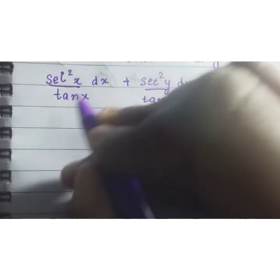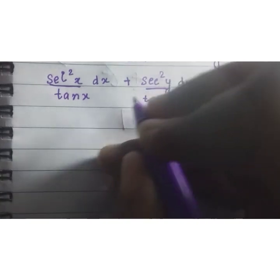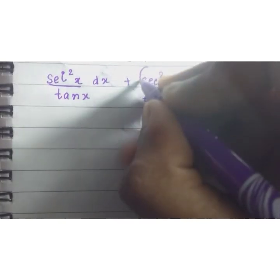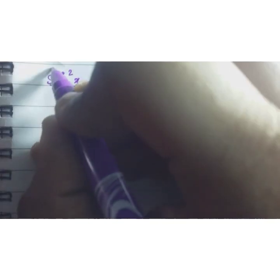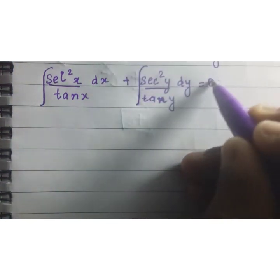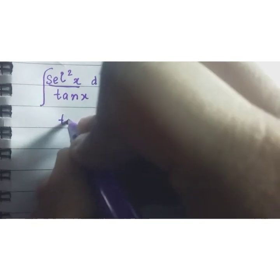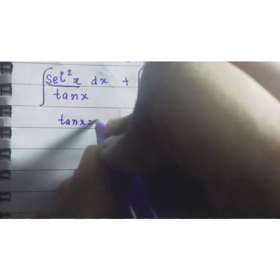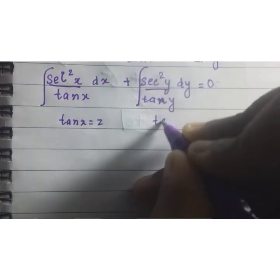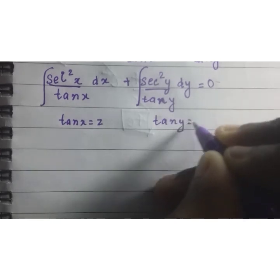Now we need to solve this. We can put an integration sign over here and here and this will remain 0. So, let us assume tan(x) to be z and tan(y) to be t.